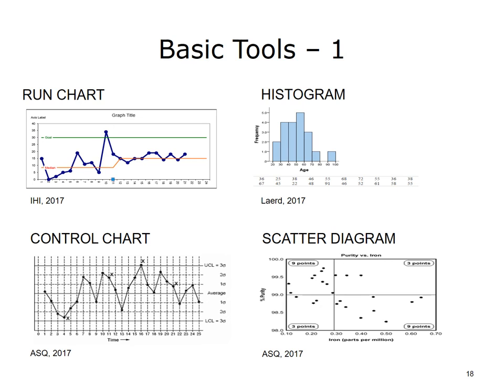Run charts are plots of data, arranged chronologically, that can be used to determine the presence of some types of signals of special cause variation in processes. A center line, usually the median, is plotted along with the data to test for shifts in the process being studied.